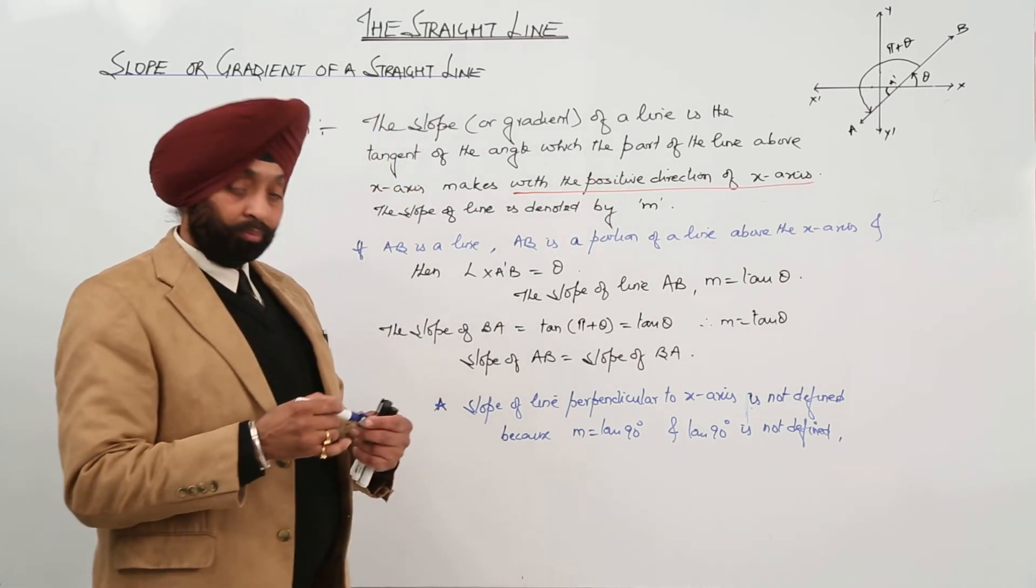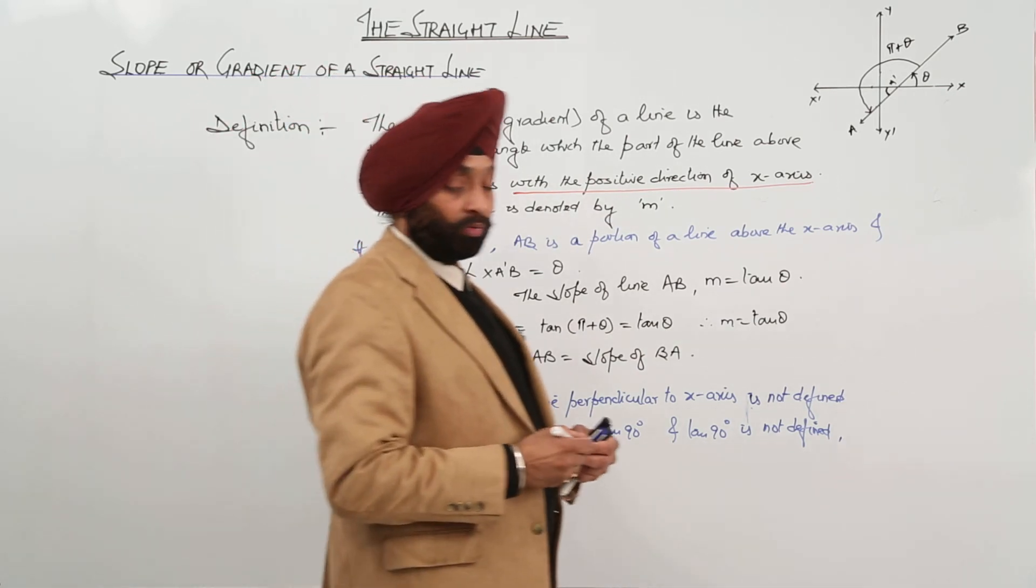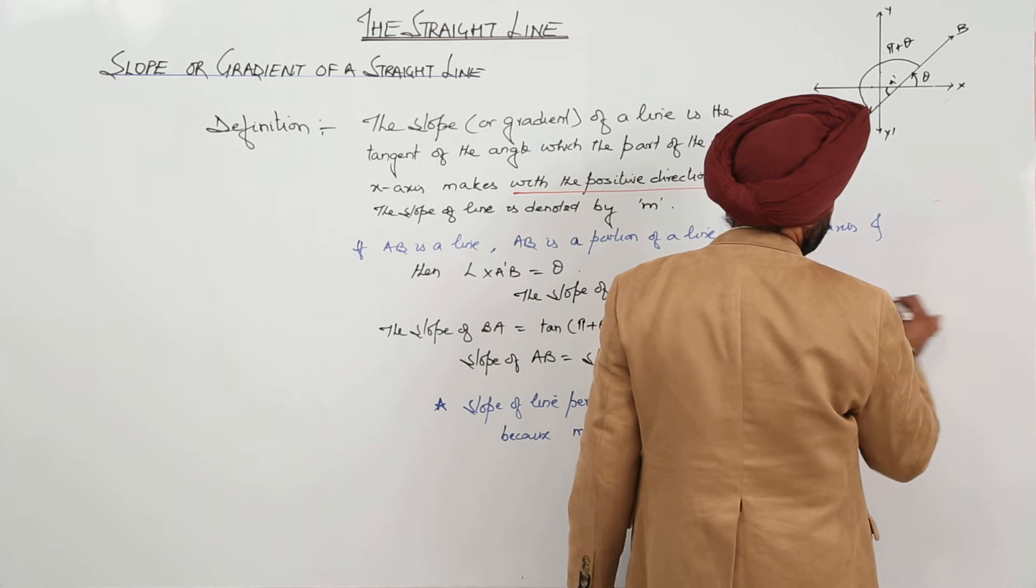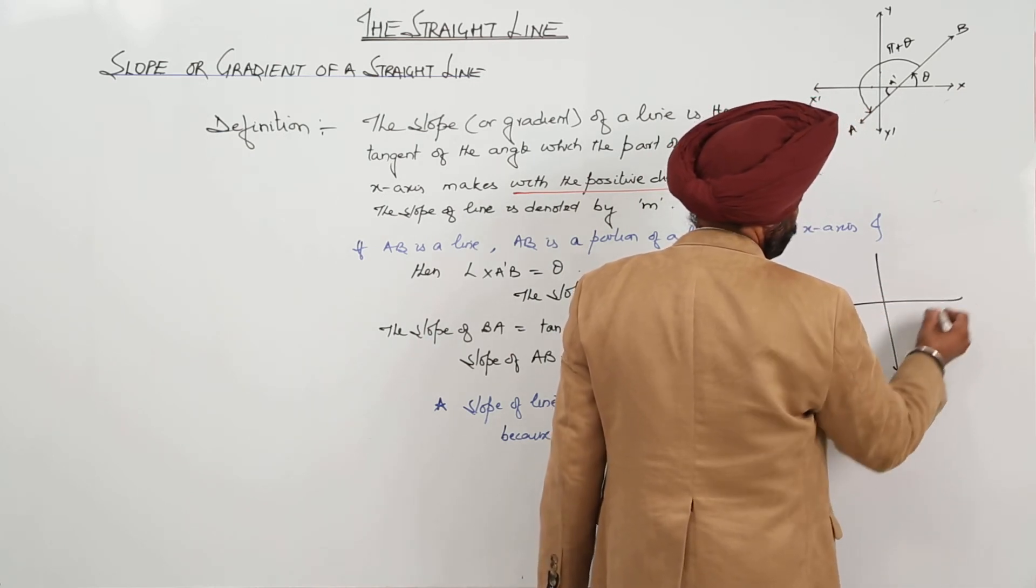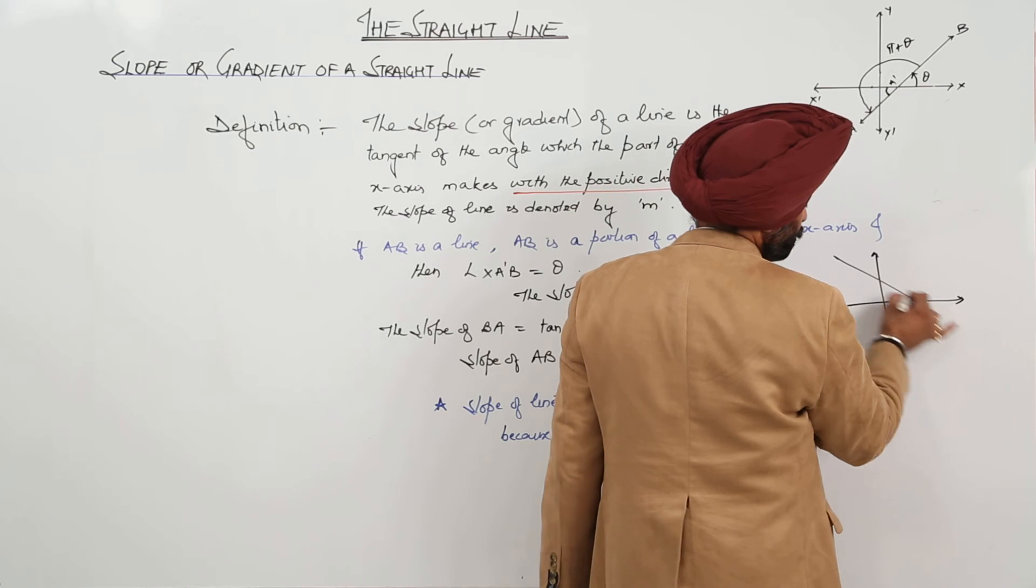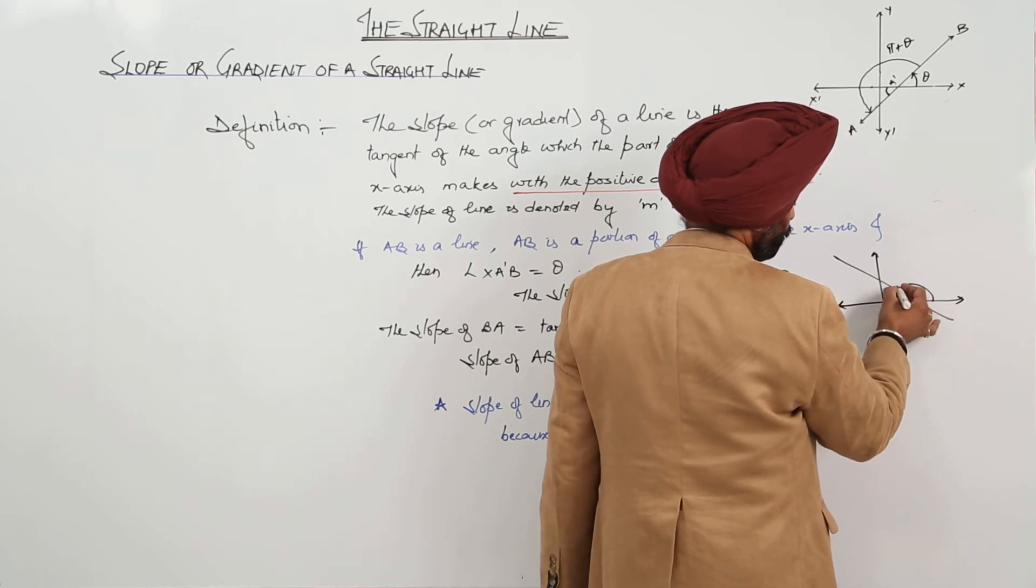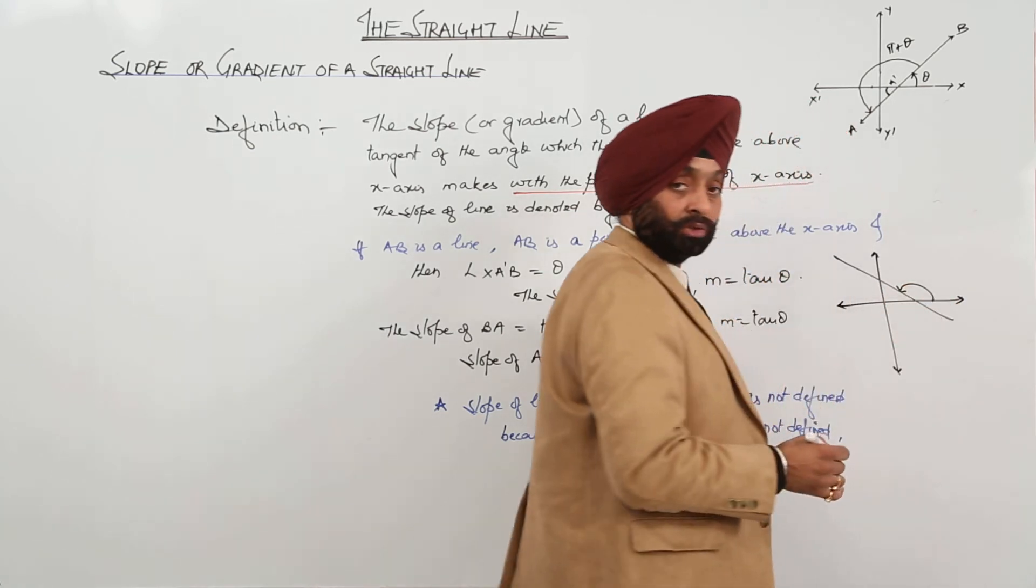So, this was all some basic things about the slope of a line. Now, just look here, we are having suppose one line like this one. So, its slope will be this one. This will be the slope.